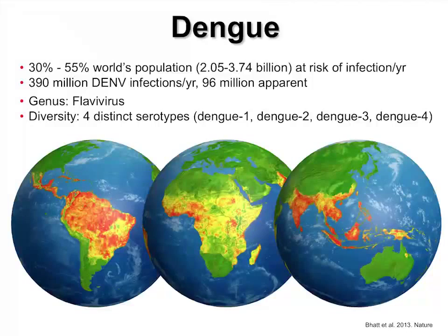One of the interesting things about dengue is it's a multi-strain pathogen. There are four different serotypes — dengue 1, 2, 3, and 4 — and it's possible for you to get dengue four different times.